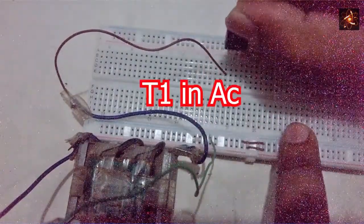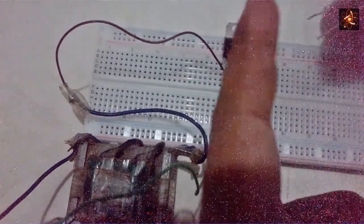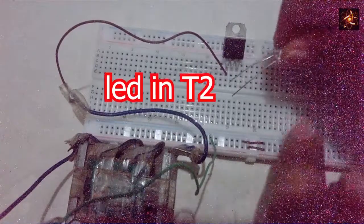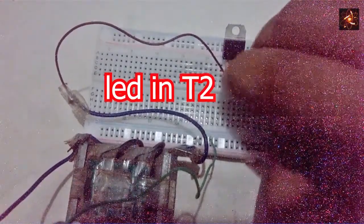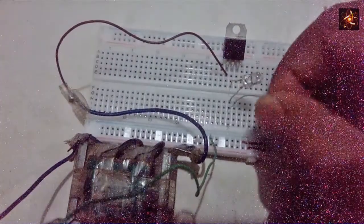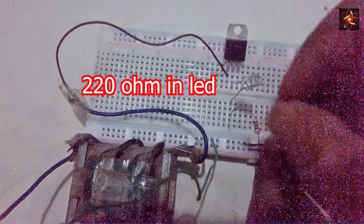Now connecting T1 pin to one part of the AC. One side of the LED is connecting to T2 pin or terminal 2 pin. And opposite side of the LED is connected with 220 ohm resistor to limit the current.